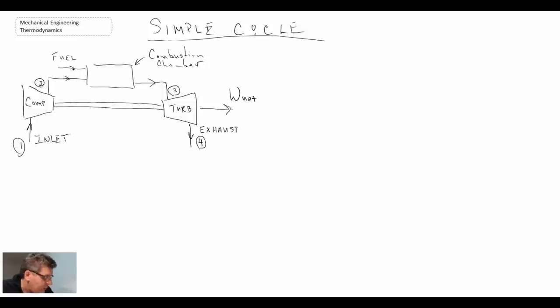So that is our process schematic. What we'll do now is take a look at process diagrams, and we're going to look at two different types: one on a TS and the other a PV diagram. So we'll start with the TS. And this is the one that I tend to work with whenever I'm dealing with the Brayton.